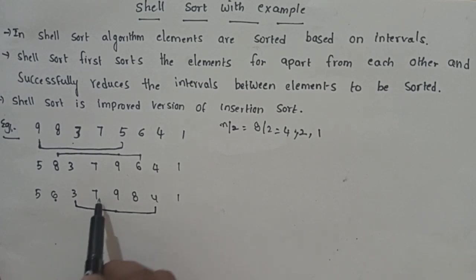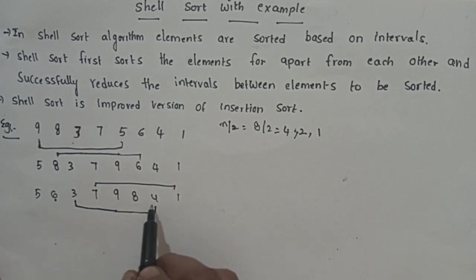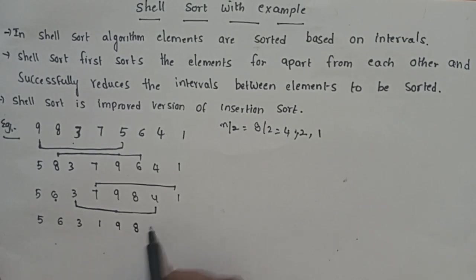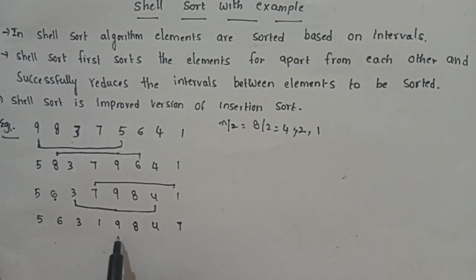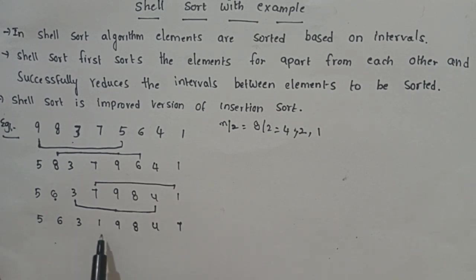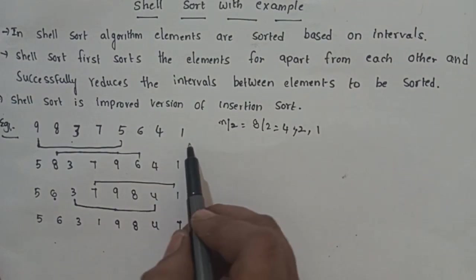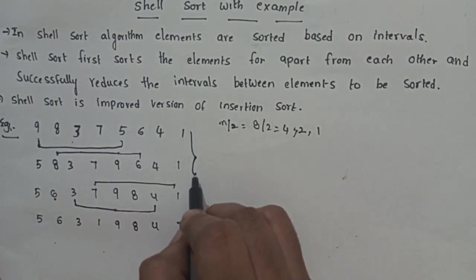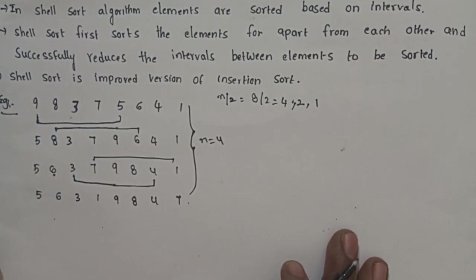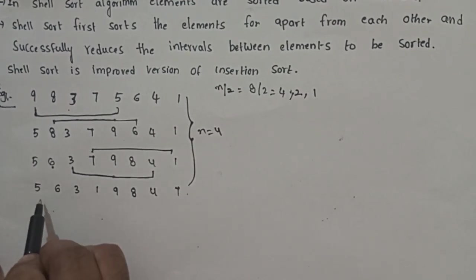Next element is 7. With 4-element gap, comparing 7 and 1 — 1 is less than 7, so swap. Array becomes: 5, 6, 3, 1, 9, 8, 4, 7. Now checking 9 with 4 positions ahead — no further element. The gap-4 pass is complete. Now reduce the interval to 2.